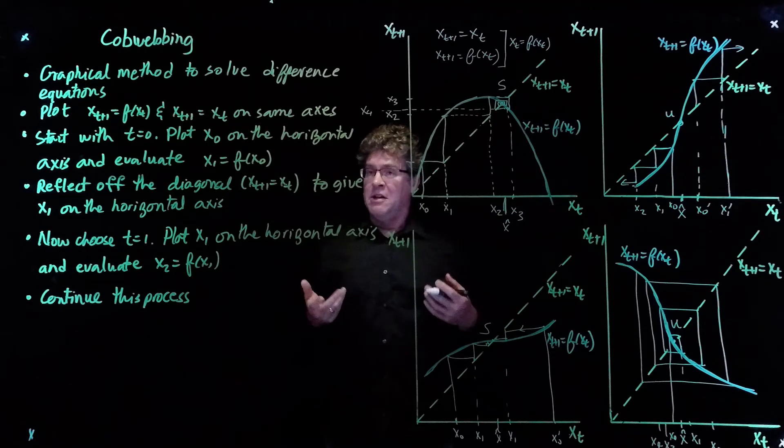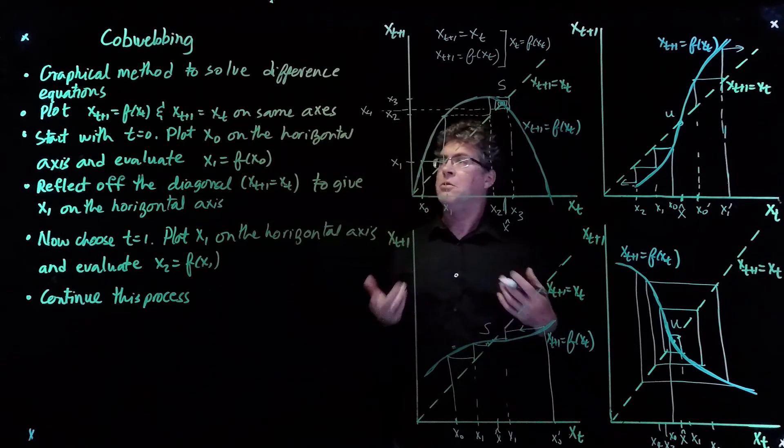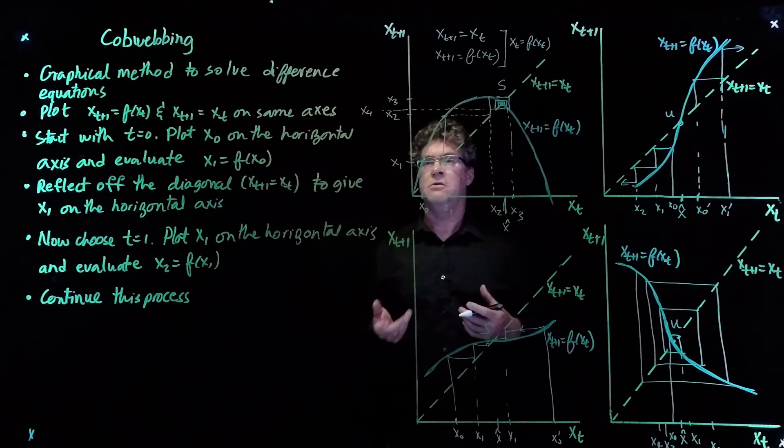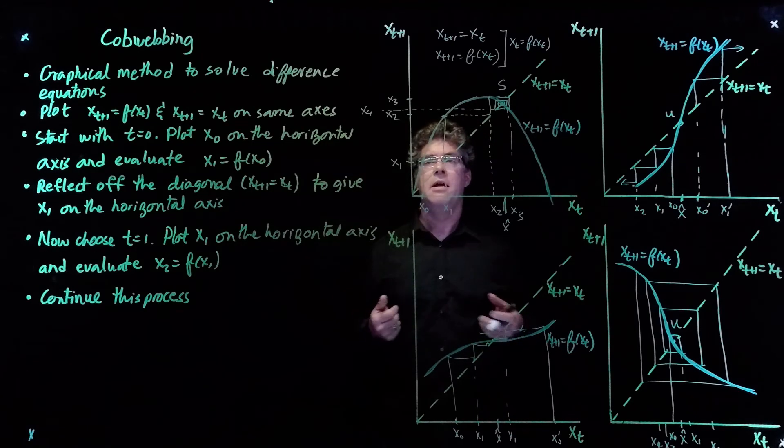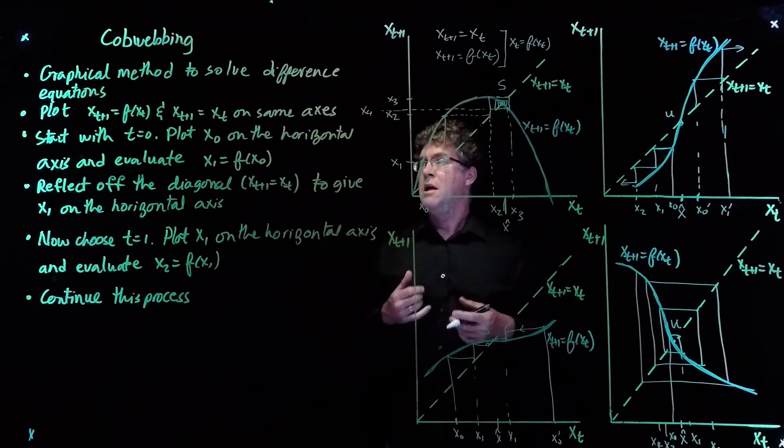So cobweb can give us a lot of insight. It's a graphical method, and so all we need to do is have a piece of paper, know how to graph the function, and then use the rules.